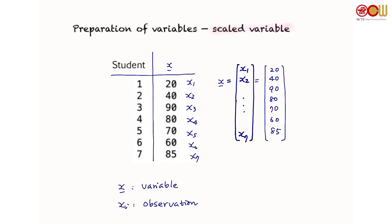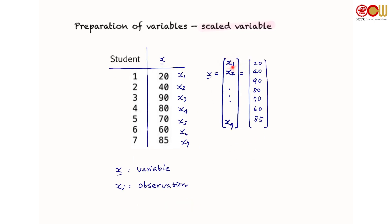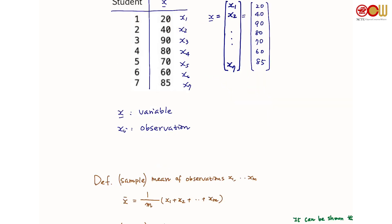Before we start with the actual analysis, we usually prepare the variables — that is, we convert them to scaled variables. Let's use the student example with only one variable, the midterm score. We have variable x with some observations, and we collect these observations into one vector. We call these observations x1, x2 to x7, because now we have seven observations. In general we would have m observations, x1 to xm. We define the sample mean of observations x1 to xm, which is simply the average of these observations.